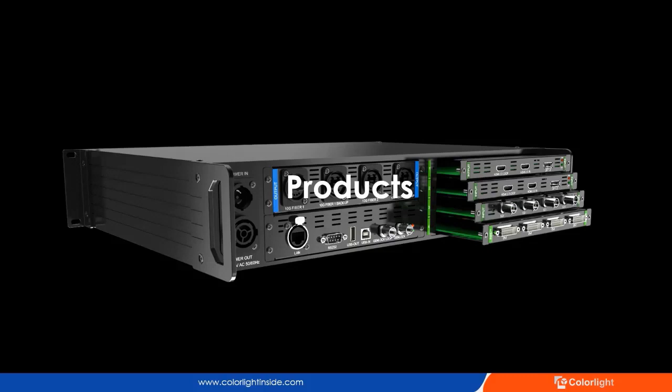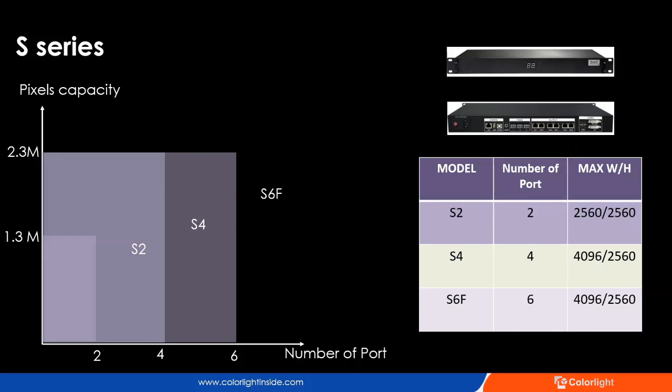In the second part, I will introduce the different loading capacities in our product line and show how to choose controllers through a simple case. First, we are talking about X-Series. X-Series is a basic sender in ColorLite which can map the video source on a screen pixel by pixel, and there is no video processing function built in. Currently, there are three models in X-Series: X2 has two outputs, X4 has four, and X6 has six outputs with a 2.5 GB fiber output.